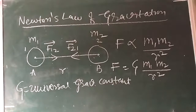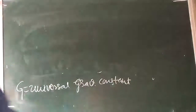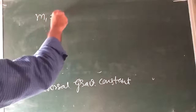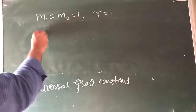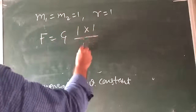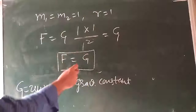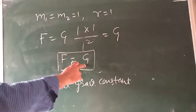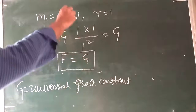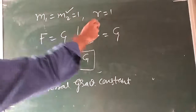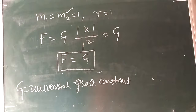What is the definition of G? If both masses M₁ and M₂ are 1 kg and the distance between the two bodies is also 1 meter, then F = G·M₁·M₂/R² = G. So the universal gravitational constant equals the force of attraction acting between two bodies each of unit mass whose centers are placed unit distance apart.